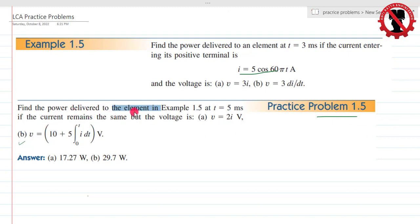Find the power delivered to the element in example 1.5, an element in which we have found power. How much power delivered? Current is I equal to 5 cos 60 pi T. And the voltage is 2i.